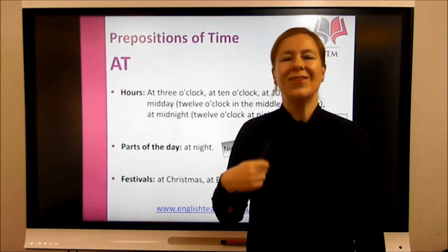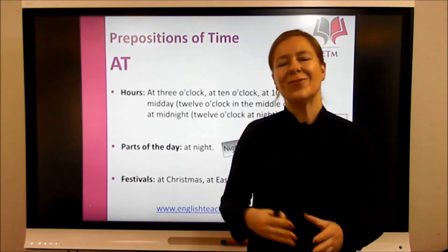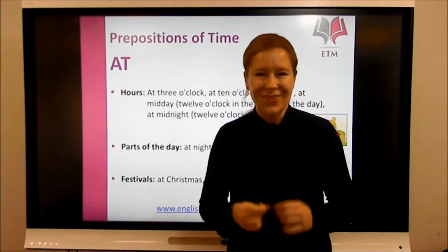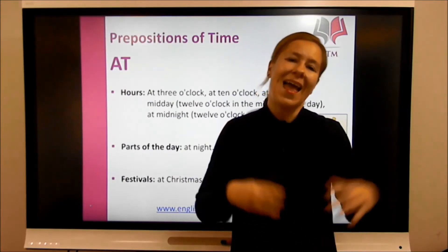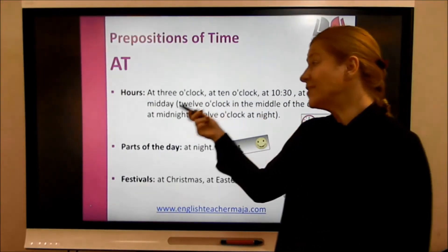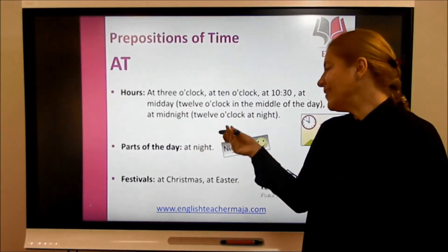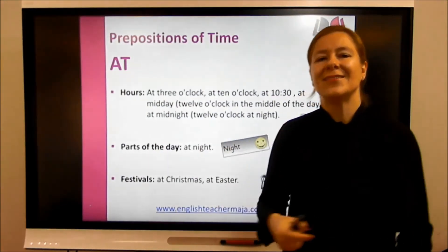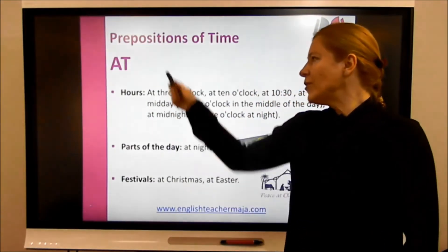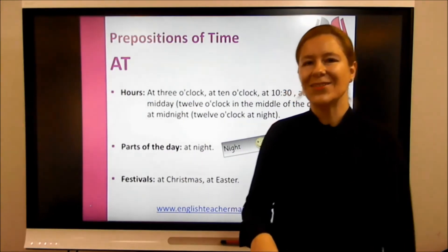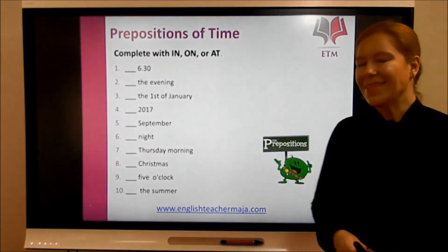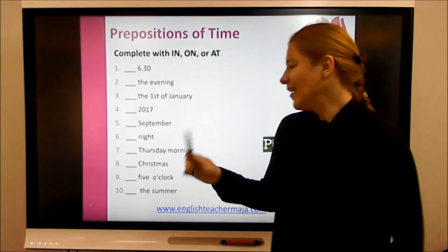We also use 'at' with midday and midnight. Midday is 12 o'clock in the middle of the day — a very specific time — so we say 'at midday.' Midnight is also a very specific time, at 12 o'clock at night, so we say 'at midnight.' With night, we also use 'at': at night. We also use 'at' for festivals, for example at Christmas and at Easter.